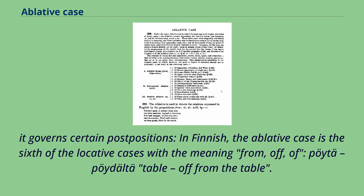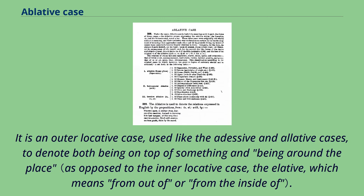In Finnish, the ablative case is the sixth of the locative cases, with the meaning 'from,' 'off,' or 'of' — for example, pöytä means 'table,' and pöydältä means 'off from the table.' It is an outer locative case, used like the adessive and allative cases to denote both being on top of something and being around a place.